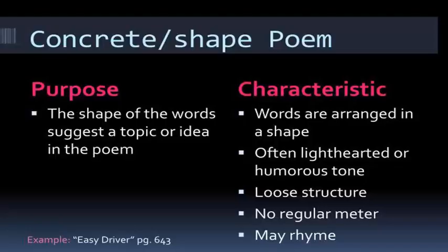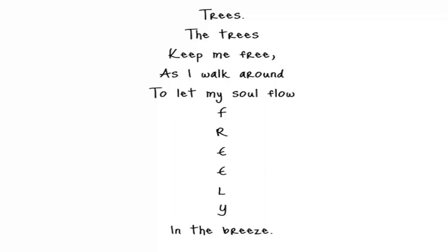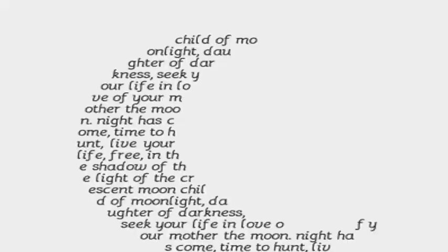Another kind of poem is a concrete poem or shape poem, where the shape of the words suggests the topic or idea in the poem. Words are arranged in a way that suggests the poem's meaning. It is light-hearted, humorous, and has a loose structure — no regular meter, no rhyme scheme. For example, a concrete poem about trees has words arranged to give the impression of a tree: 'The trees keep me free as I walk around to let my soul flow freely in the breeze.' Similarly, a poem about the moon has words arranged to give an impression of the moon.